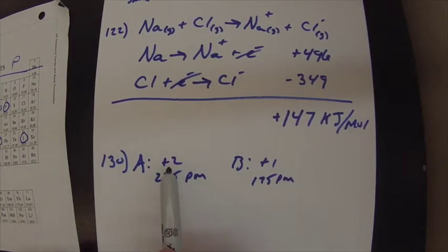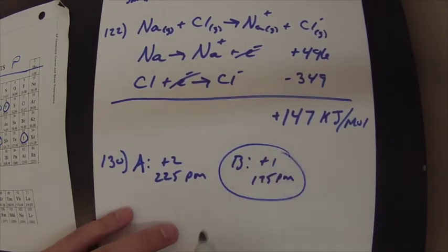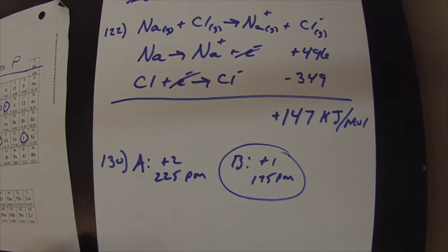So effective nuclear charge definitely has something to do with that, and an effective nuclear charge is going to change your ionization energy, increase your ionization energy, but the radius, the distance, makes a much bigger difference. So this is going to have the higher ionization energy, because it's much, much closer.